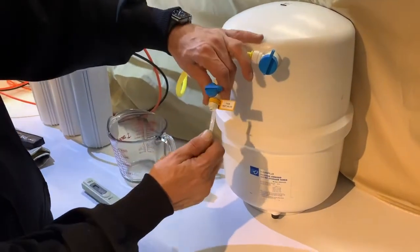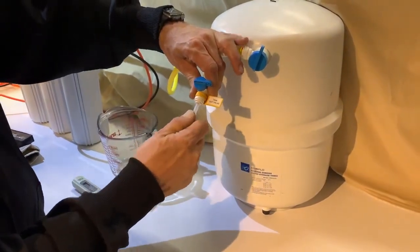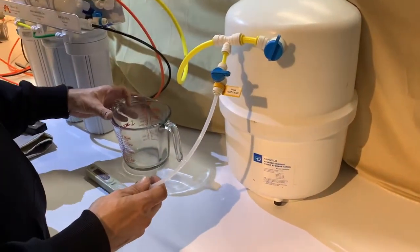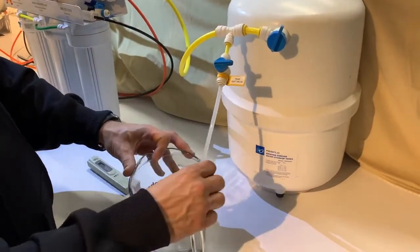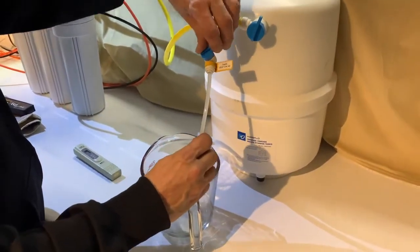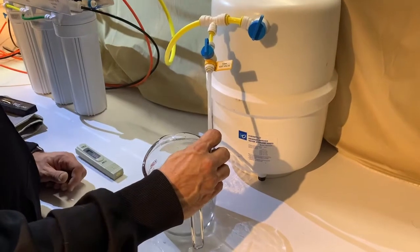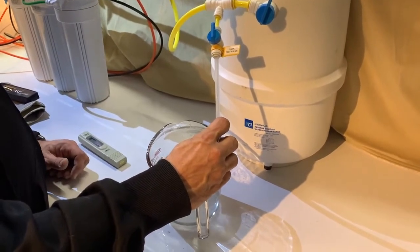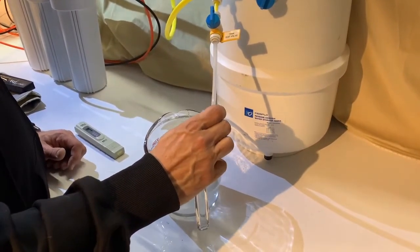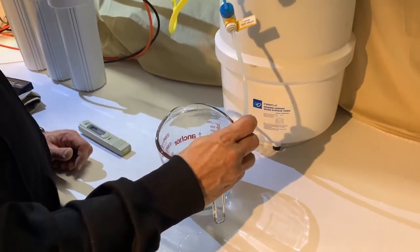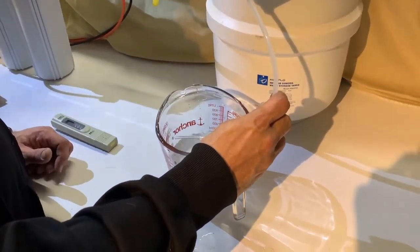The next thing you want to do is stick this extension into the tank test valve, which is the first valve we're going to test, point it into your container and open it. It's going to come out gushing at first, but then it's going to slow to a trickle. That's the water coming out of the system as it's being made.